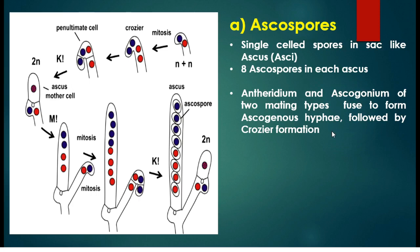Ascogenous hyphae formation is followed by crozier formation. A crozier is an anatomical feature of many fungi in the phylum Ascomycota that forms at the base of the ascogonium and looks like a hook-topped shepherd's crook. The crozier helps to maintain the dikaryotic state of both the ascus itself and of the side branch that will continue propagation of the ascogenous hyphae.